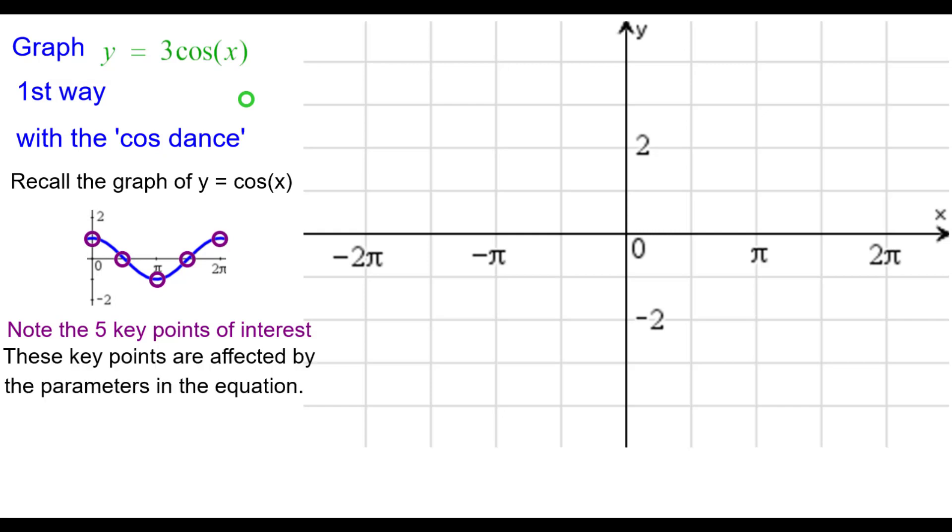These key points and all points on the cosine are affected by the parameters in the equation. The only one here is a times 3 times the function. So this 3 times multiplies each y value by 3.